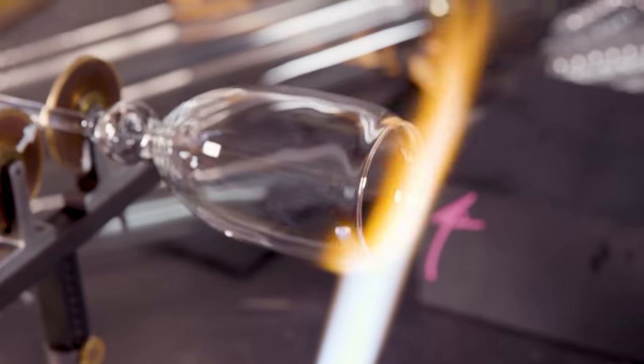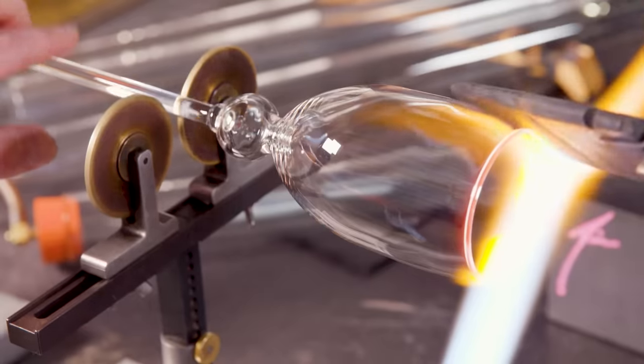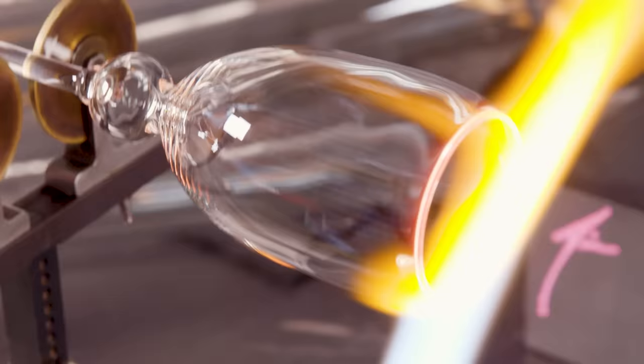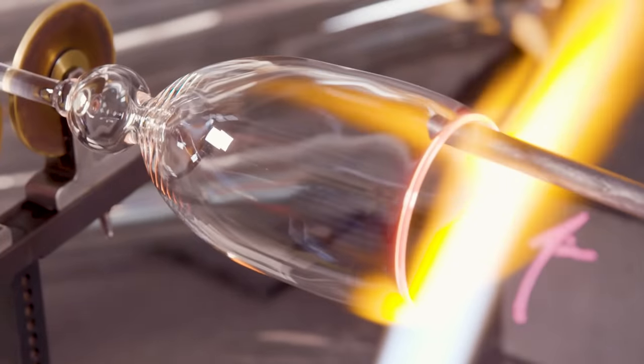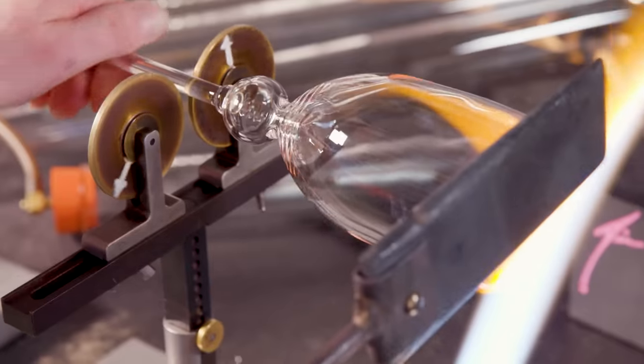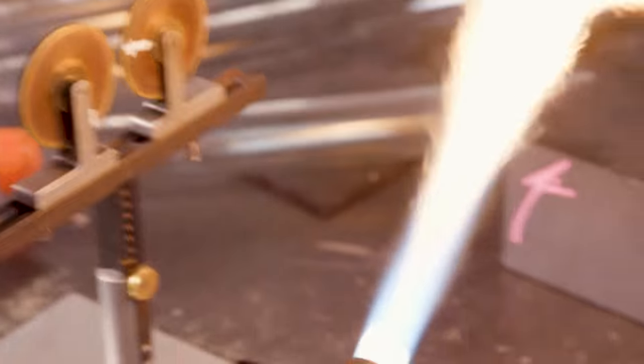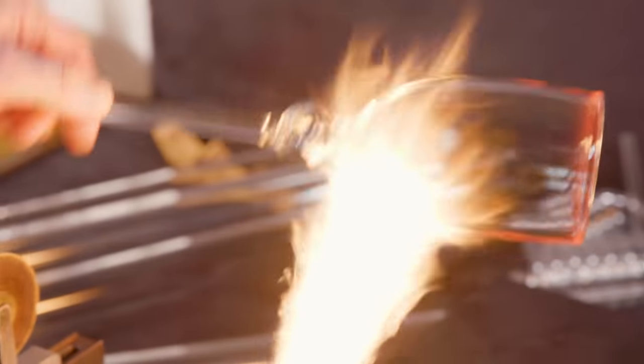Then I heat the whole lip evenly and I use my graphite paddle to push the rest of the glass back even and then my graphite rod to flare the lip even. Graphite is used in glass blowing because it can take a lot of heat and it's pretty much indestructible when it comes to flames. There you have it.